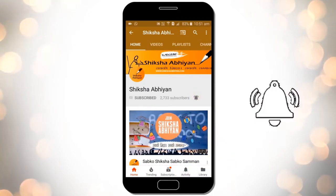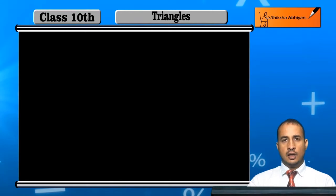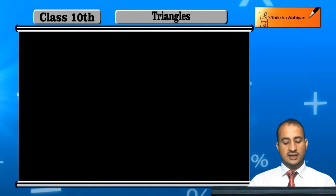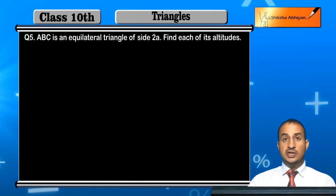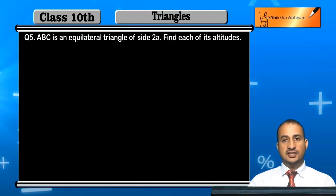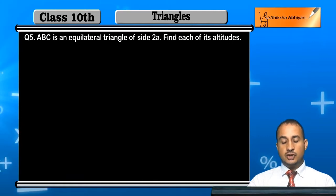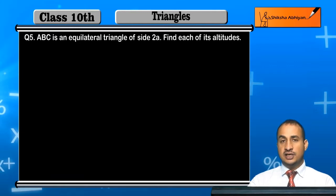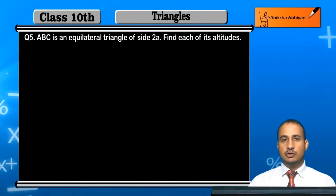Students, see the fifth question. ABC is an equilateral triangle of side 2a. Find each of its altitudes. Since in an equilateral triangle all altitudes are equal, you need to find the altitude of this triangle.